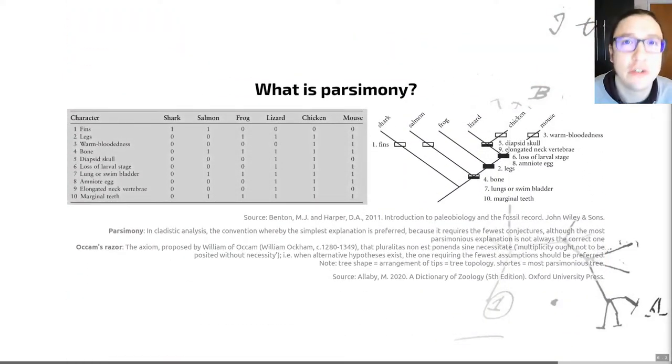So let's look at the first of our approaches which is a thing called parsimony. Parsimony is defined on the slide for you here. This is in phylogenetic analysis the convention whereby the simplest explanation is preferred because it requires the fewest conjectures, although the most parsimonious explanation may not always be the best one or the correct one. This is a conceptually fairly simple approach which has been used to build morphological trees for a very long time. It was used to build molecular trees but it's very rarely used for molecular phylogenies nowadays because there are known flaws in the process that lead to artifacts. This builds on an axiom created by William of Ockham in the 13th century that said multiplicity ought not to be posited without necessity - the simplest answer is the best.